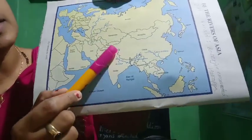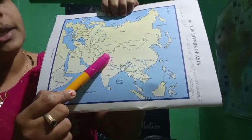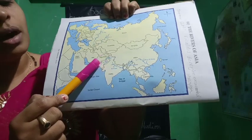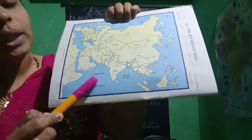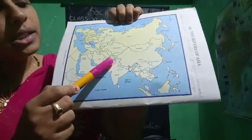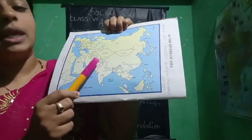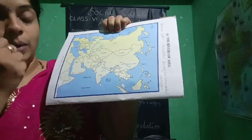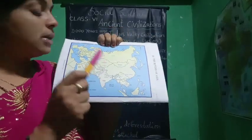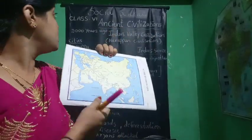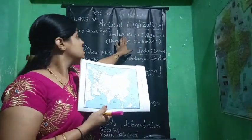The Indus river — it originates at Manasarovar, flows through Ladakh, Punjab, and Pakistan, and then has its mouth on the Arabian Sea. So this Indus river is now flowing along almost the border of Pakistan and India. On the bank of the Indus river, our Indus Valley civilization — the first civilization of India — was starting.